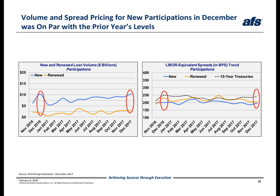Next, we will look at the volume and pricing trends for participations. On slide 25, the chart on the left shows that new and renewed participation volume was up in December from both the prior month and the same period a year ago. Looking at the chart on the right, a negative correlation is seen for new loans and renewals when compared to December of last year. The weighted average LIBOR equivalent spread for new loans is down 4 basis points and the average spread for renewals fell 26 basis points. When compared to the previous month, the weighted average LIBOR equivalent spread for new loans is up 10 basis points, while the average spread for renewals fell just 2 basis points.